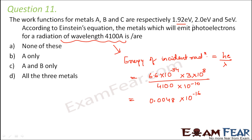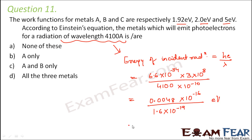Since the work functions are given in electron volts, let us convert this also into electron volts. We divide by 1.6 × 10⁻¹⁹, and this comes out to be approximately 3 electron volts.